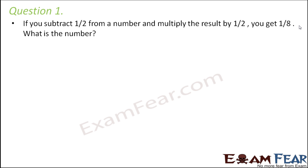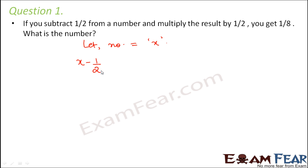Question number 1. If you subtract 1/2 from a number and multiply the result by 1/2, you get 1/8. What is the number? To solve these kinds of questions, whatever you have to find, just assume that to be some variable. So let us say that this number is x. According to the question, x minus 1/2 multiplied by 1/2 equals 1/8. So this is your linear equation.